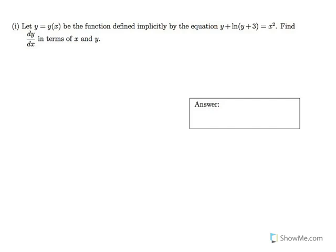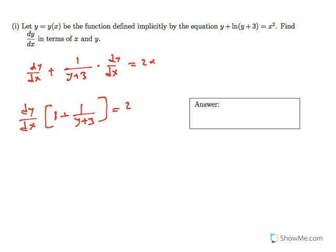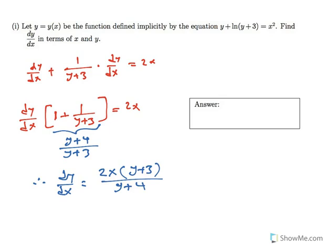Part I: y is implicitly defined by the given equation; find dy/dx in terms of x and y. Taking the derivative of both sides, the derivative of y is dy/dx, and the derivative of ln(y plus 3) is 1 over (y plus 3) times dy/dx, which equals 2x. Factoring dy/dx gives (1 plus 1 over (y plus 3)) equals 2x, simplifying to (y plus 4) over (y plus 3). Therefore dy/dx equals 2x times (y plus 3) over (y plus 4).